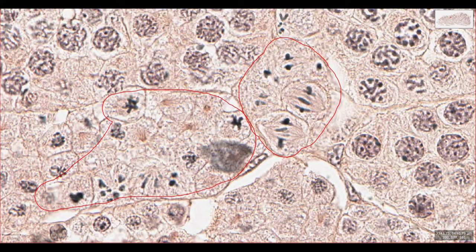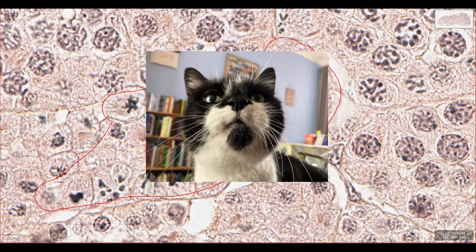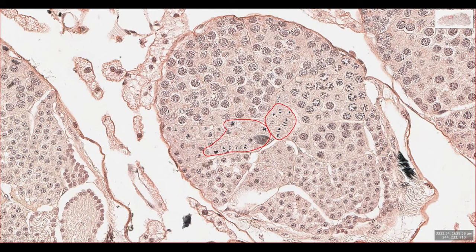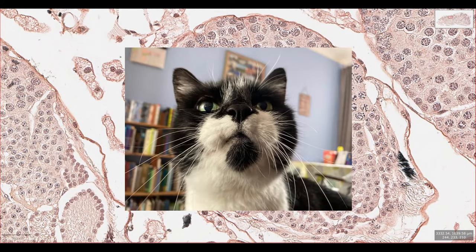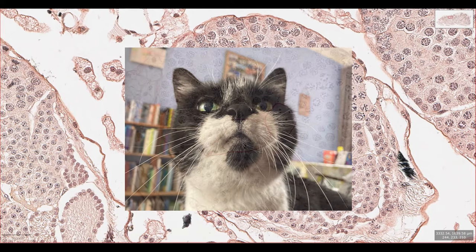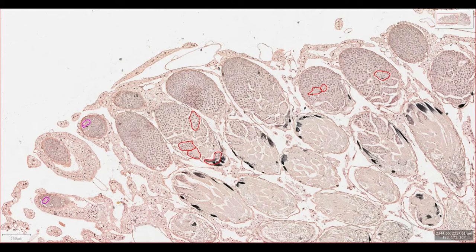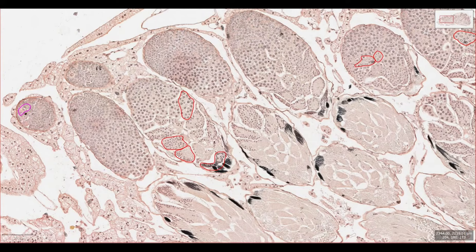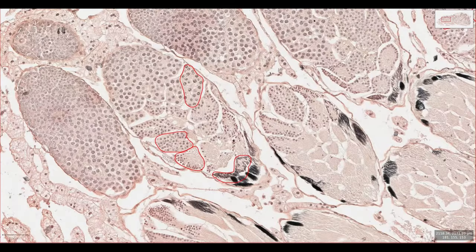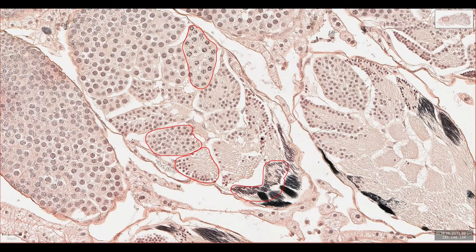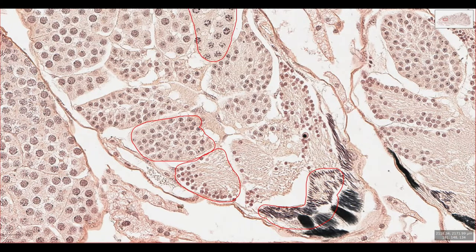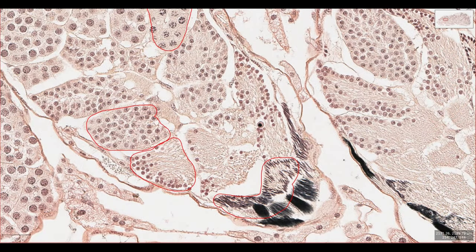Once meiosis is over, each of the resulting daughter cells is now a spermatid. They are immature and not yet ready to go out into the world as spermatozoa. The maturation of spermatids to spermatozoa is called spermiogenesis and occurs in the zone of transformation, which is towards the tip of the testis follicle.